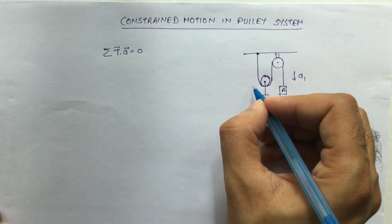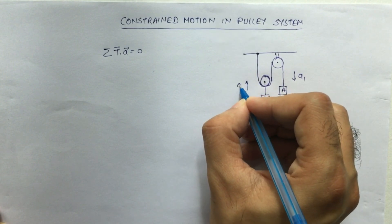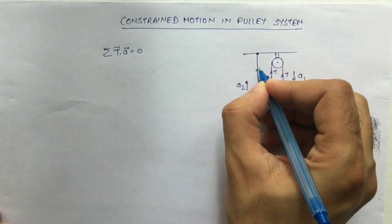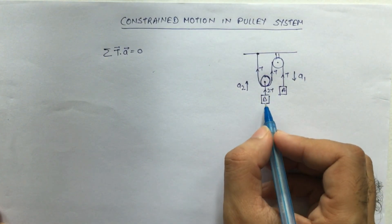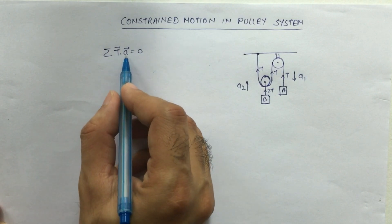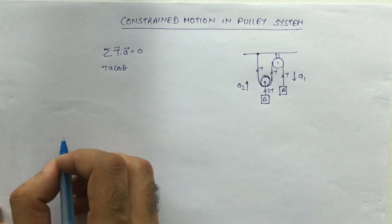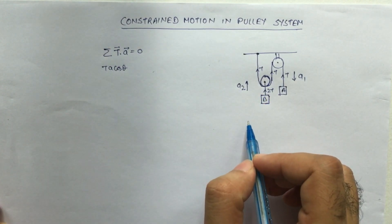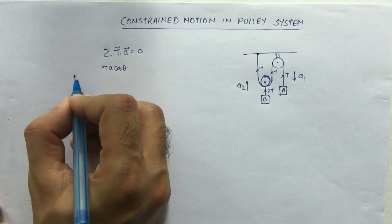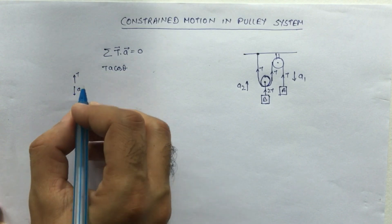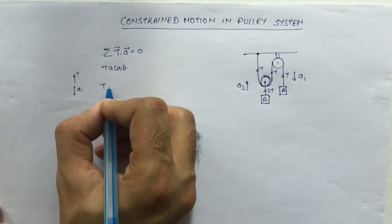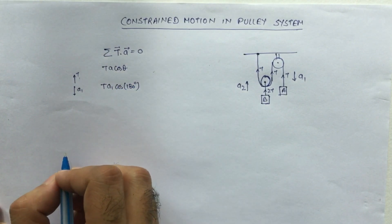To solve this kind of problem, let's say the acceleration of block A is a1 in the downward direction and the acceleration of block B is a2 in the upward direction. The tension in the string is T, and at the moving pulley it is 2T. For each block we define T dot a, which is T times a times cosine of theta, where theta is the angle between the tension and the acceleration. For block A, tension is upward and acceleration is downward, so theta is 180 degrees.